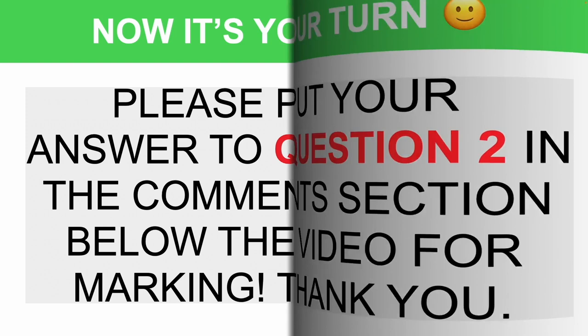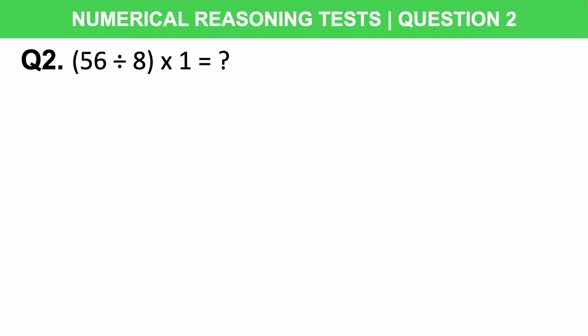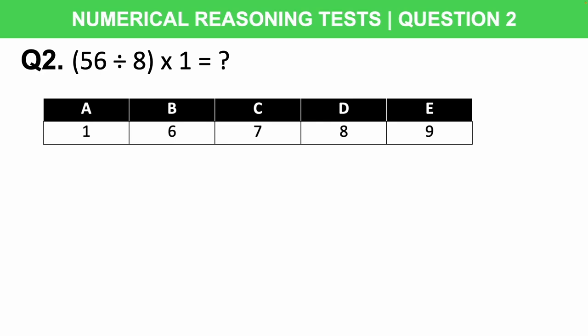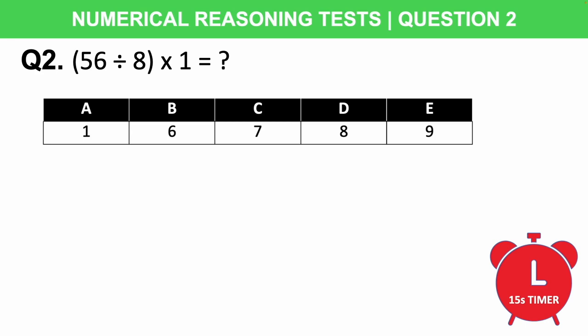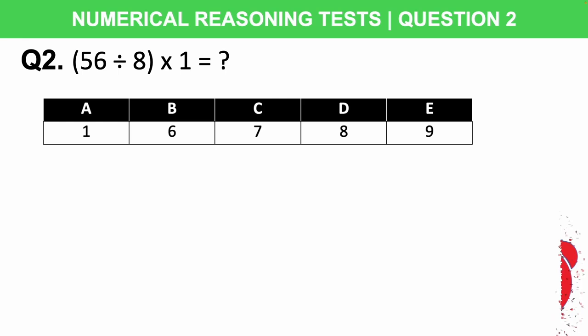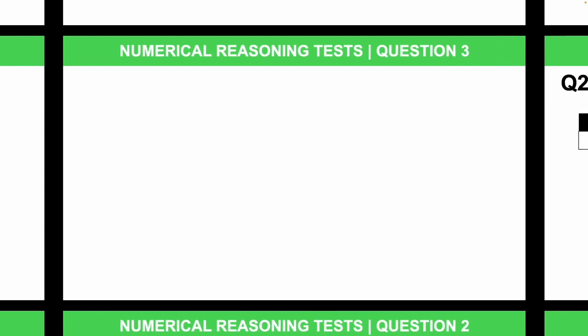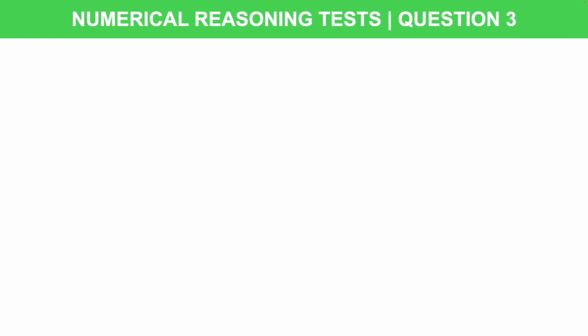Question 2: 56 divided by 8 times by 1 equals what? Is it A: 1, B: 6, C: 7, D: 8, or E: 9? I'm going to give you 15 seconds on the timer to work this out. If you need more time, pause the video. You can always improve your speed by practising more questions like these under timed conditions later on.